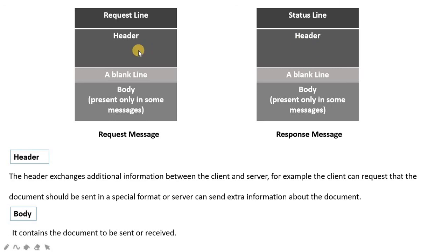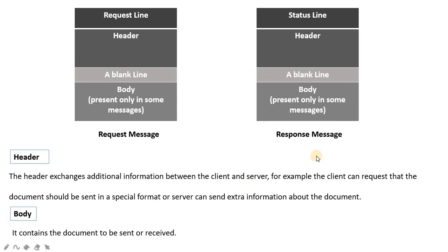The next part of the HTTP message is the header, which is almost the same in both request and response messages. The header carries additional information between the client and server. For example, the client can specify in the header that the document should be sent in a particular format, and the server will respond accordingly.